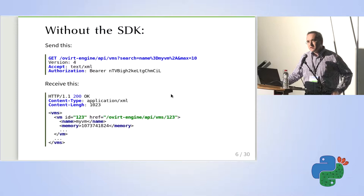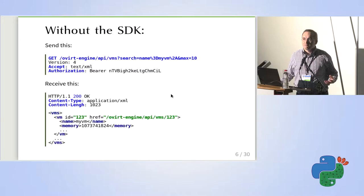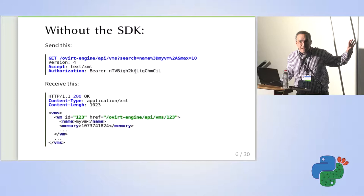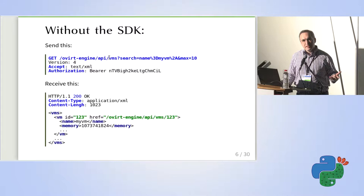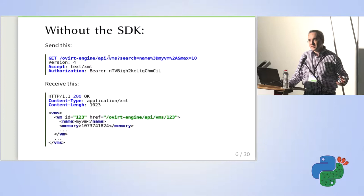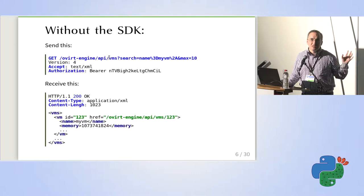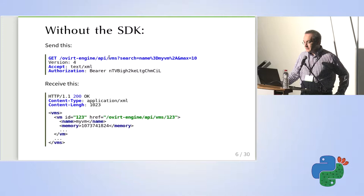To give you an idea of how it works, this is how you have to use the API if you just use the HTTP protocol. You have to take care of sending requests, authentication, sending the right headers, URL encoding the parameters, and all those things. And then you get back an XML document that you have to parse and extract information from. It's not adding a lot of value to your application.